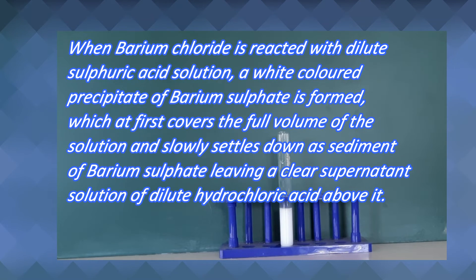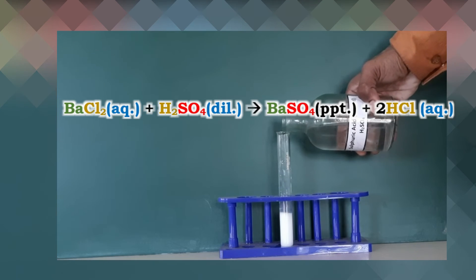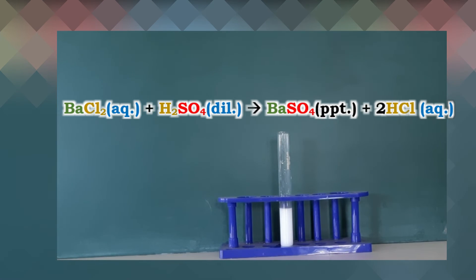clear supernatant solution of dilute hydrochloric acid above it. The reaction taking place is: BaCl2 plus H2SO4 gives BaSO4 plus 2HCl.